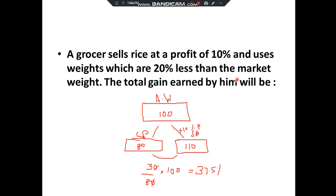Question 7: 'A grocer sells rice at 10 percent profit and uses weights that are 20 percent less than the market weight. Find the total gain.' No gram values are given, so take actual weight as 100. Cost price: 20 percent less than 100 = 80. Selling price: 10 percent profit on 100 = 110. Now find the total gain percentage. Try it yourself — the answer is 37.5 percent.